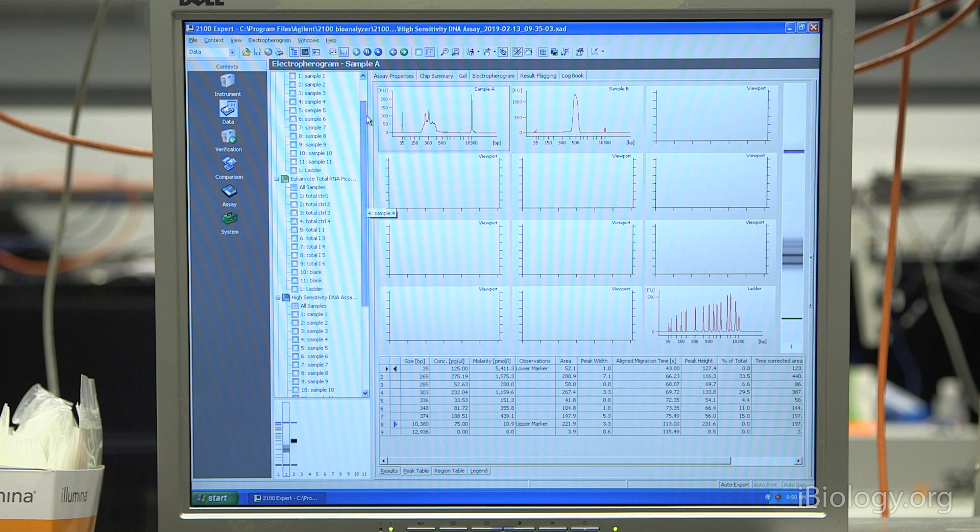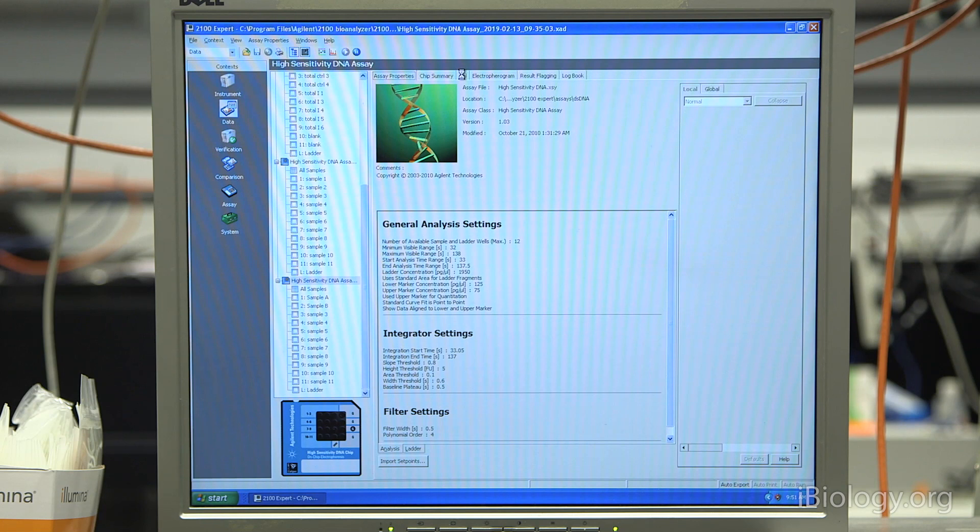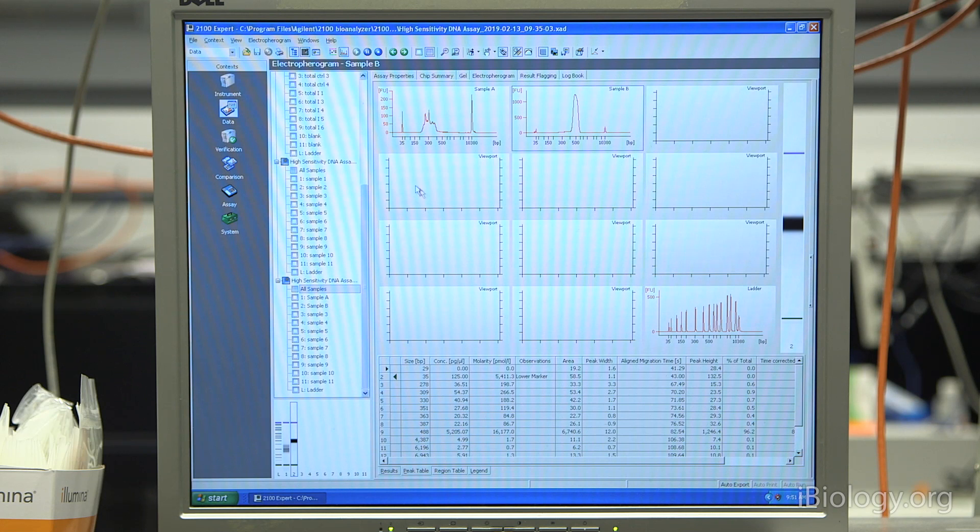If you have several runs from beforehand, you'll see the other chips here. The newest one will be at the bottom, which is our sample. If we click on that chip, we'll get some details about the chip, the assay properties, and then if you want to take a look at the raw traces, you click on the electropherogram. This will show you the trace for either one sample at a time, so this is our first sample, and this was our second sample. Or you can look at all samples at once. Here's sample A and sample B. And down here is the ladder.